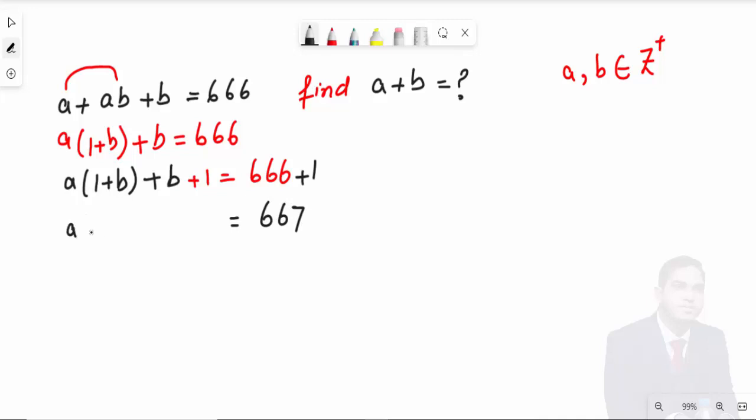Now this is a times, can I write b + 1 plus b + 1? Take this b + 1 and this b + 1 out of this parenthesis, like (b + 1) into (a + 1). So (b+1)(a+1) = 667.